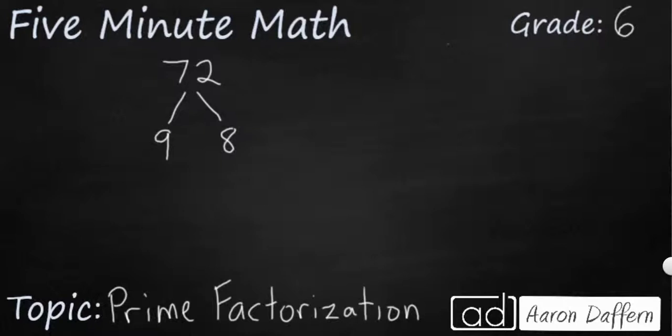I'm not going to say 1 times 9, because that's not going to do me any good. So I can break down 9 into 3 and 3. You notice how both 3 and 3, they're both prime numbers. I can't break those 3s down any farther, because the only way to get 3 is 1 times 3. So I'm going to circle those 3s to let me know I'm done.